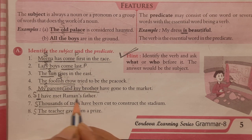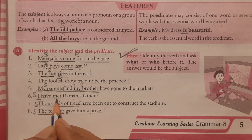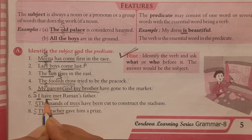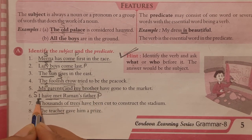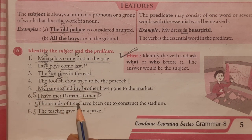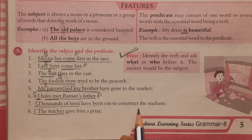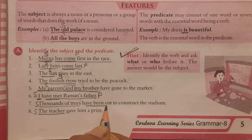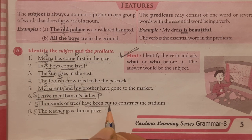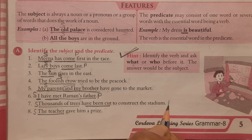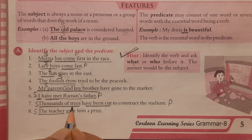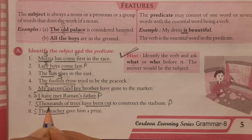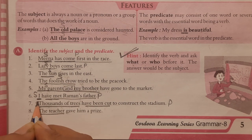'I have met Raman's father.' The verb is 'met' with helping verb 'have.' We ask: who have met? 'I' — so 'I' is the subject and the rest is the predicate. 'Thousands of trees have been cut to construct the stadiums.' The verb is 'have been cut.' We ask: what have been cut? 'Thousands of trees' — not just 'trees,' but 'thousands of trees.' The whole phrase is the subject.